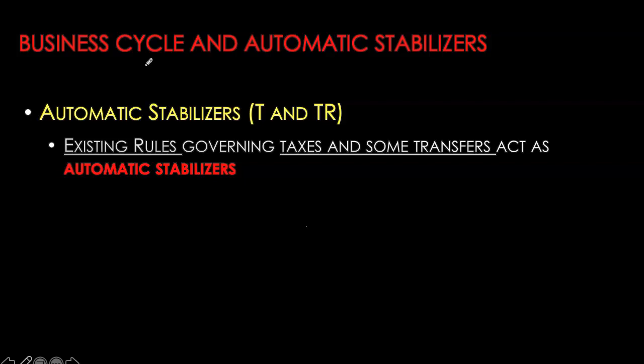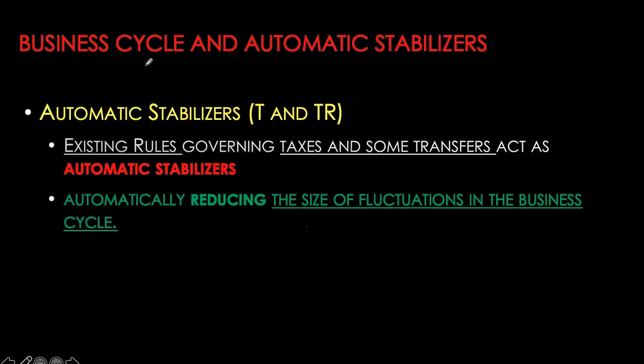Next, we make the distinction between automatic stabilizers and discretionary fiscal policy. Discretionary fiscal policy involves deliberate changes in government spending, taxes, and transfers, whereas automatic stabilizers refer to existing rules governing taxes and transfers in the economy. The more progressive the taxation system or the more robust the social safety nets, the smaller the fluctuations and the more stable the economy. However, do not confuse this with closing the output gap — automatic stabilizers do not close output gaps completely; they just make the size relatively smaller.